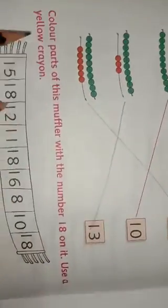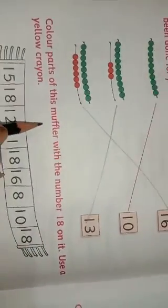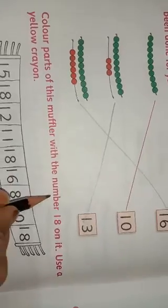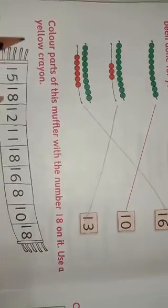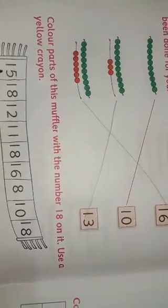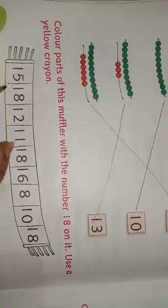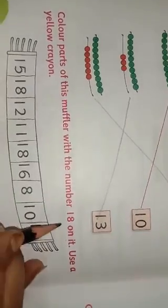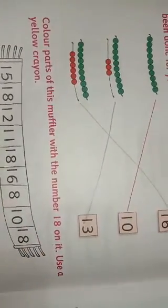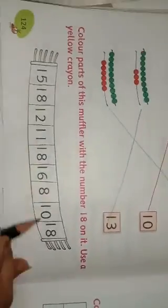Then next. Color parts of this muffler with the number 18 on it. Use a yellow crayon. This is the muffler and on the muffler there are given some numbers. What should we do? 18 on it. We have the 18 number. We have to color with yellow crayon.